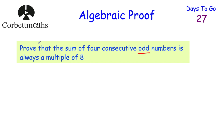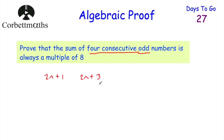Our question says: Prove the sum of four consecutive odd numbers is always a multiple of 8. We need four consecutive odd numbers, so I'd use 2n+1 as my first odd number. The next number 2n+2 would be even, so my next odd number is 2n+3. Then 2n+4 is even, 2n+5 is odd, 2n+6 is even, and 2n+7 is odd. So our four consecutive odd numbers are: 2n+1, 2n+3, 2n+5, and 2n+7. If you substitute values for n, you'll find you get consecutive odd numbers.